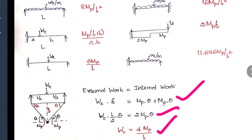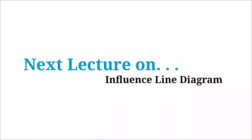In the plastic theory concept, the three key areas are: how to calculate the number of plastic hinges, shape factor values for different sections, and collapse load for different structures. At least one of these will be asked in all exams, making this a very important topic. Thank you, and keep watching for the next lecture on influence line diagrams.